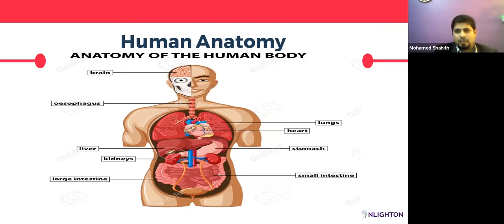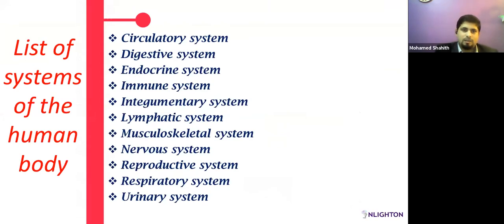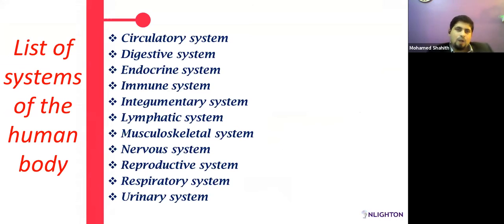This presentation is also available on our portal at a very minimal fee. We can see slides giving more detailed information on human anatomy. Now, the list of systems of the human body: the circulatory system, digestive system, endocrine system, immune system, integumentary system (nails and skin), lymphatic system, musculoskeletal system, nervous system, reproductive system, respiratory system, and urinary system. Understanding these systems and their functions, we will correlate as discussed.